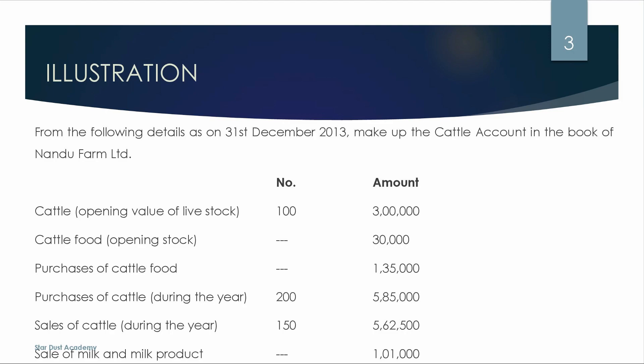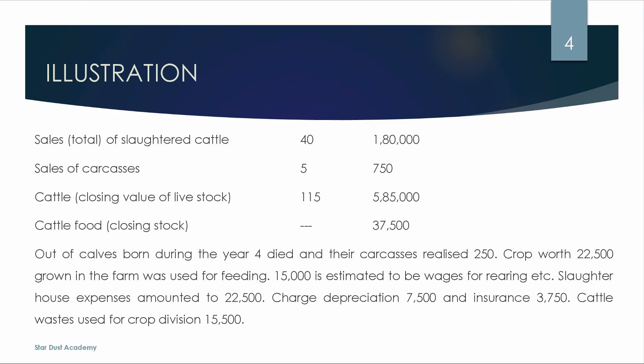Sale of cattle during the year. $5,62,500 is the sale of milk and milk products. Sale of milk and milk products is $1,10,000. Sale of cattle is $1,10,000. Sale of carcasses is $7,500. Closing value of livestock is $5,85,000.